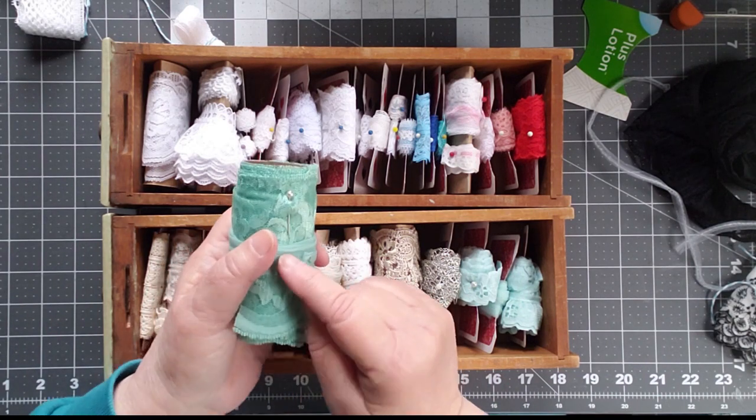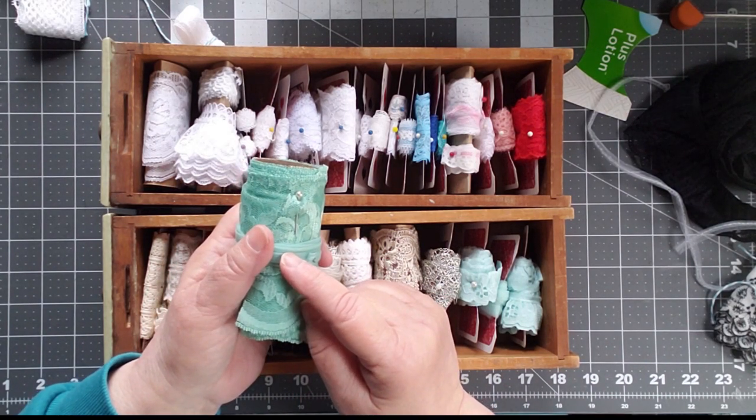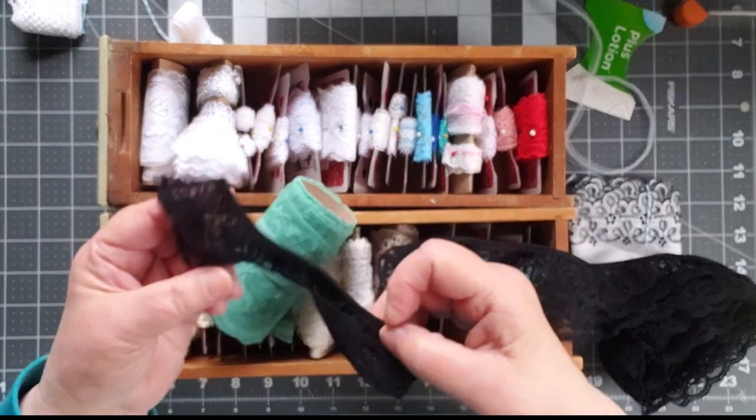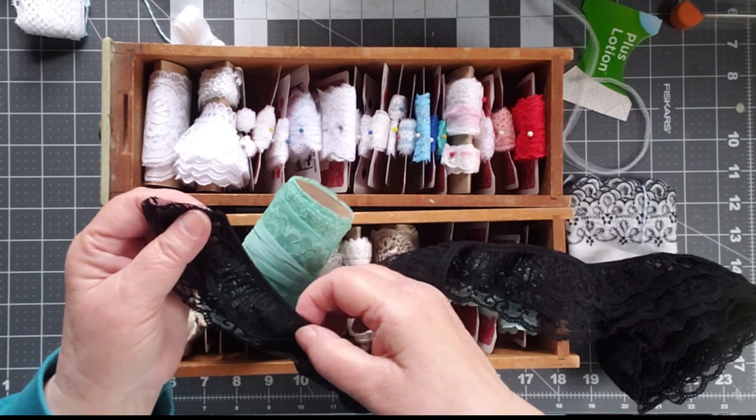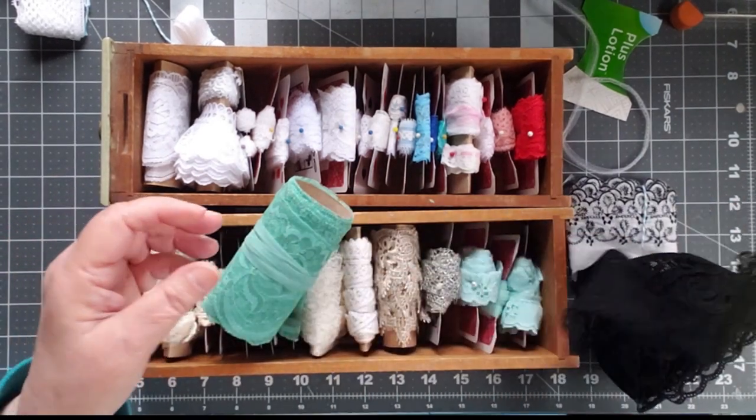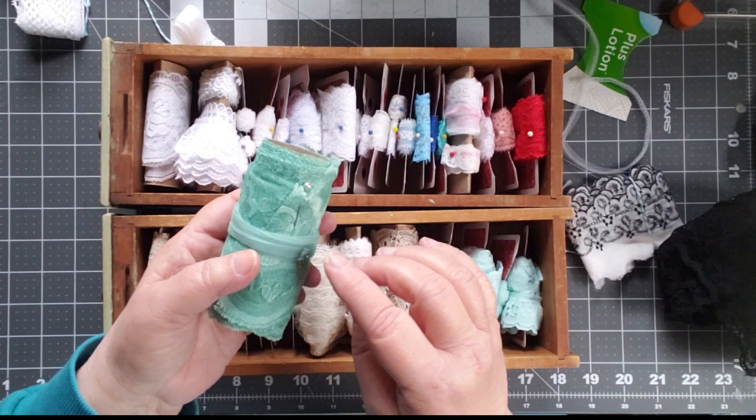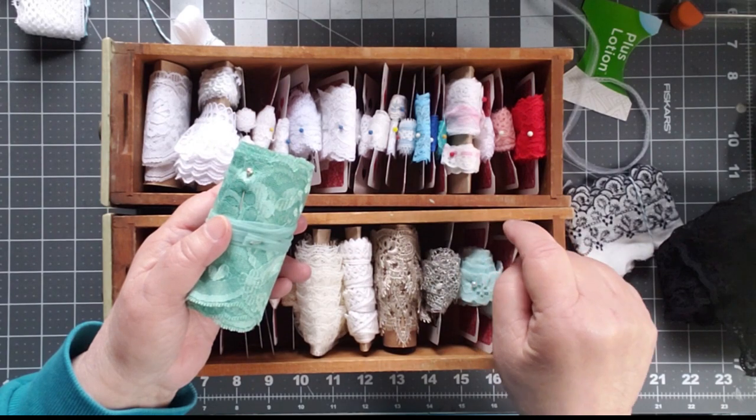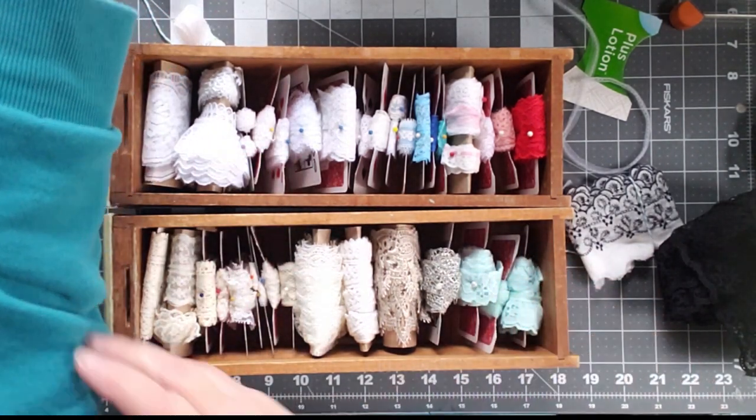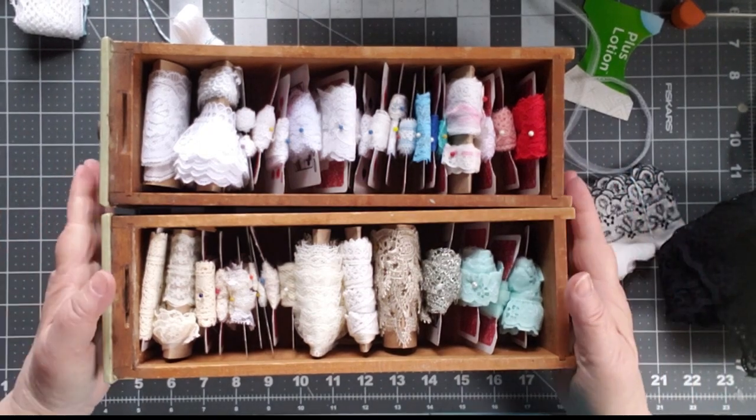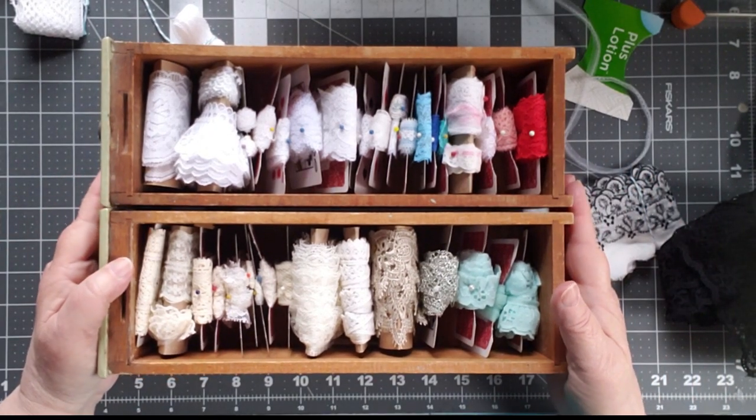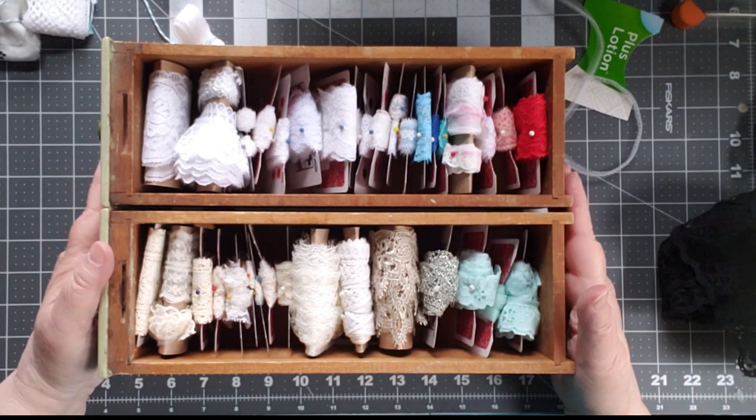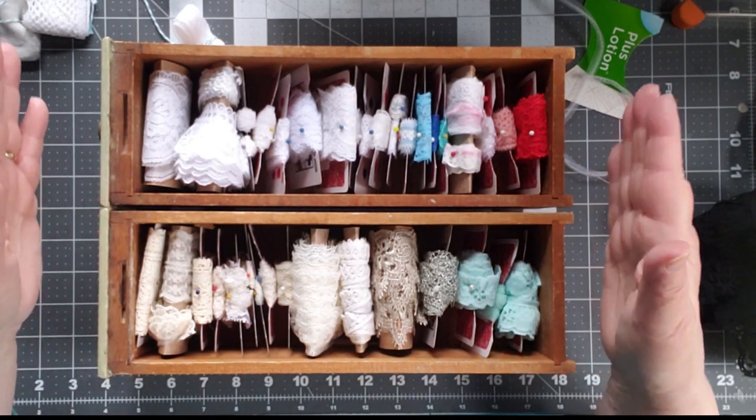The other piece I did want to mention, sometimes you get laces that have this binding across the top. If you don't want that binding, there is a way to take it off, and if you watch the video that is with the drawers, she does talk about how to easily pull that right off, and I was amazed, and it was simple. I will put that out there for you.